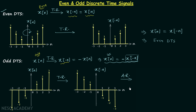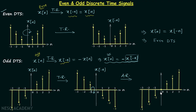For amplitude reversal, we will flip the signal waveform about the x-axis. After flipping about the x-axis, the final result is the plot of minus X(-N), obtained after performing both time reversal and amplitude reversal on the original signal Xn. Now when you compare the two waveforms you will find they are the same. This means Xn is equal to minus X(-N), and therefore the signal is an odd discrete time signal.